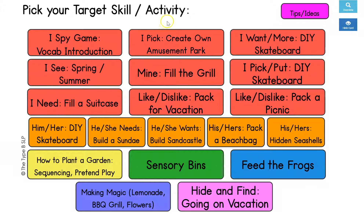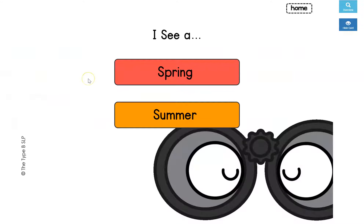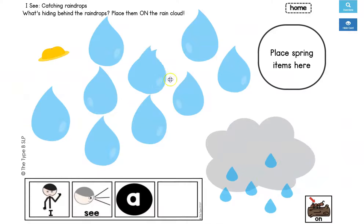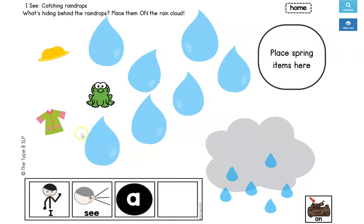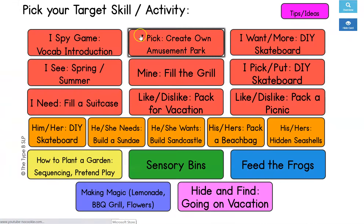The next activity I wanted to show you was the I See activity — this would be like another starter activity. Again, another way to introduce vocab or work on some of that simple vocab. For spring, 'I see spring vocab' — you're going to pull off the raindrops and can put them in the rain cloud. You can talk about how spring has lots of rain and that's the main weather we see. There are some core vocab targets there. Sentence strips are included on every page if you need them; if not, you could just cover them up with a quick box on your teletherapy platform. That goes for both spring and summer.